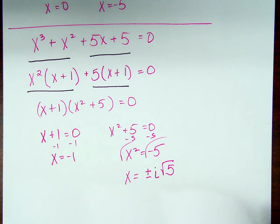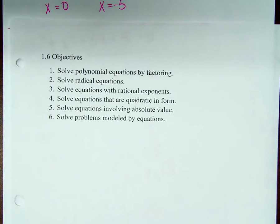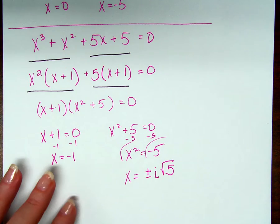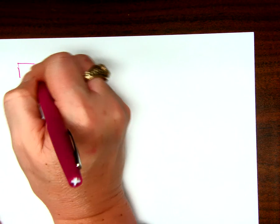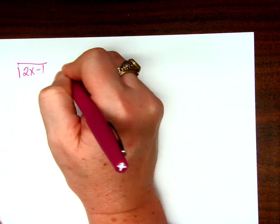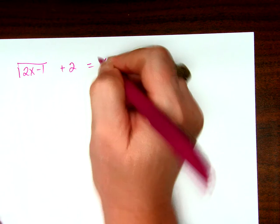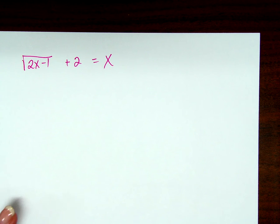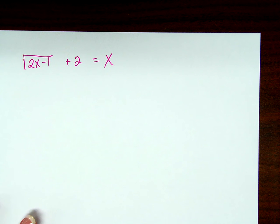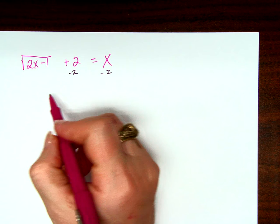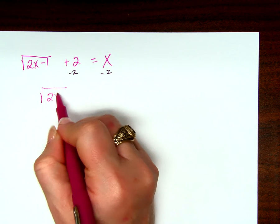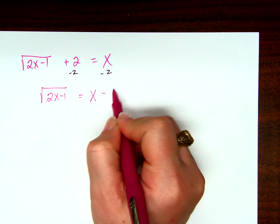Any questions? The next thing on our objective list was solving radical equations. So, an equation with a radical in it, right? For instance, the square root of two x minus one plus two equals x. How do I solve an equation like this? Yeah, I got to get rid of the two first, right?